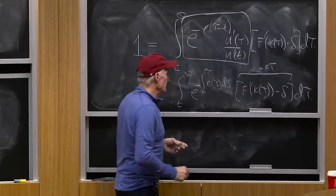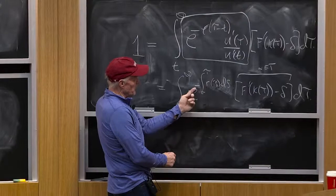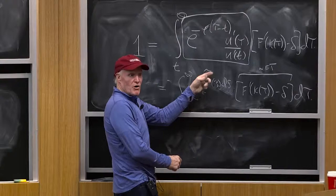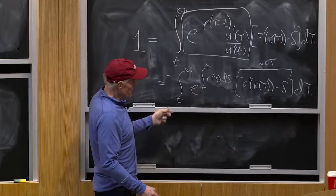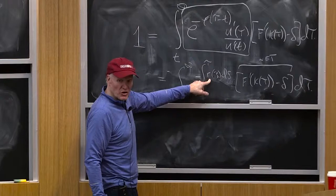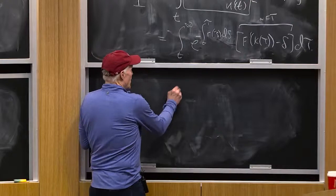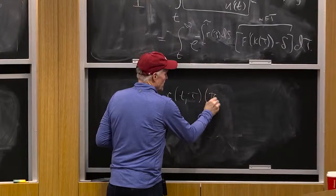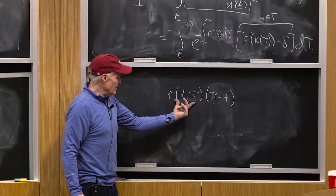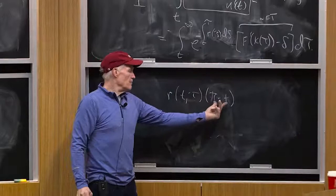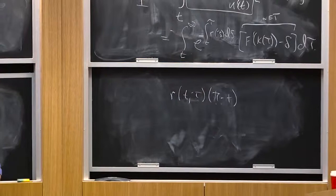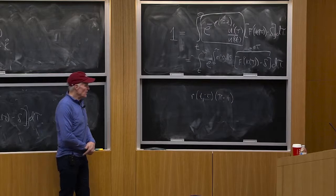Remember, these are net returns, and this is the market discount factor. Think about if r was constant — this would just be e to the minus r(tau minus t). If you wanted to think about there being a yield curve, you could write this as R(t, tau) times (tau minus t), where R(t, tau) is the interest rate between t and tau multiplied by tau minus t — that's what that integral would be, if you had a yield curve at date t.